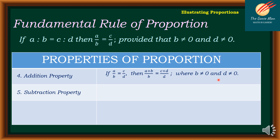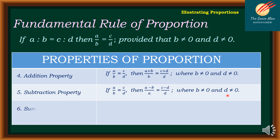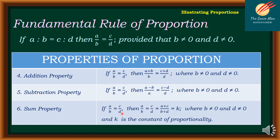The fifth is the subtraction property: if A over B is equal to C over D, then A minus B all over B is equal to C minus D all over D, where B is not equal to 0 and D is not equal to 0. Finally, we have the sum property: if A over B is equal to C over D, then A over B equals C over D, which is the same as A plus C all over B plus D, equal to K, where K is what we call the constant of proportionality.